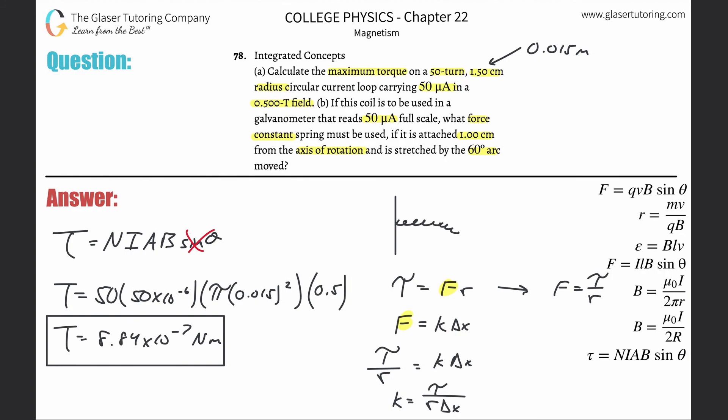We need to find the arc length. Arc length equals the radius multiplied by the angle it rotated through. Be careful, you need this in radians. This arc length is the Δx. So k = torque/(r × r × θ) where θ is 60 degrees in radians.